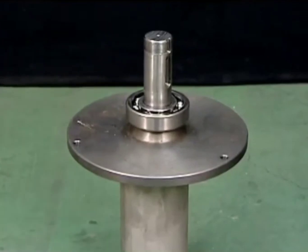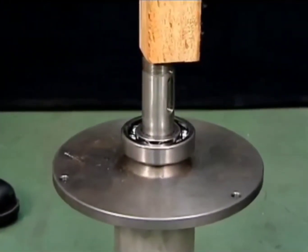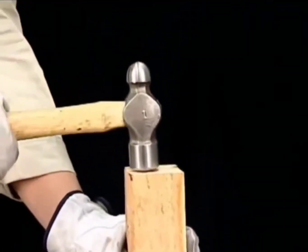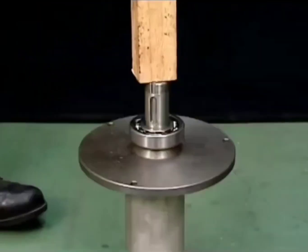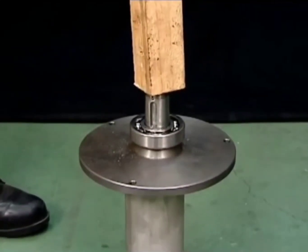Support the gear boss with a pipe or similar item and place a wooden slat against the friction pulley of the horizontal shaft. Then tap lightly to release the gear boss. This completes the disassembly of the horizontal shaft.